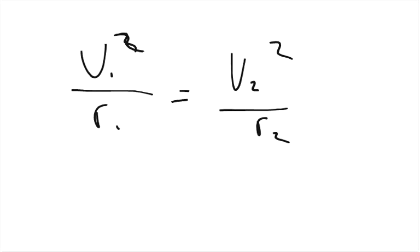And so we can set it up to say the centripetal acceleration of the first one, so V1 squared over R1 equals V2 squared over R2. And so we're saying that the acceleration that this truck can travel has to be the same, the same centripetal acceleration.